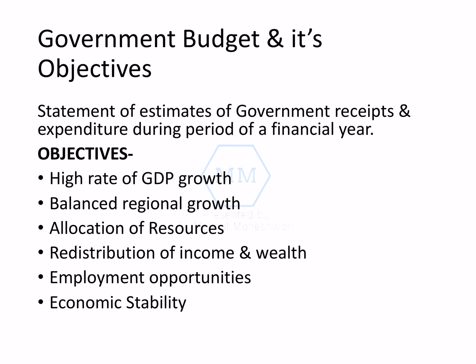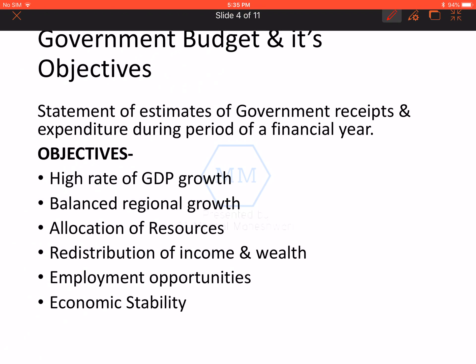Let's start with the meaning of government budget. Government budget is a statement of estimates — estimates of government receipts and expenditure during the period of a financial year. Whatever is the estimated receipts and expenditure in a financial year, presented in a statement form, that is the government budget. Always remember, these are estimated figures, not actual ones.